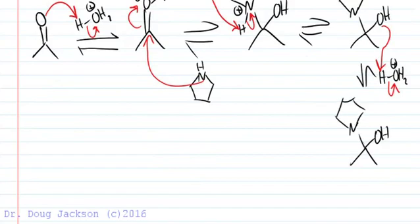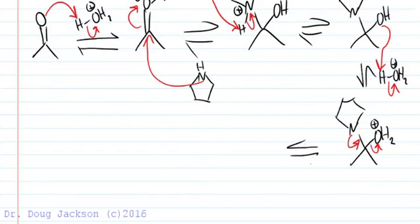We need to make this OH into a good leaving group, so we do that by protonating it and forming a water leaving group. The lone pair on nitrogen can then come back down and kick off that leaving group, and we have formed at this point an iminium ion.